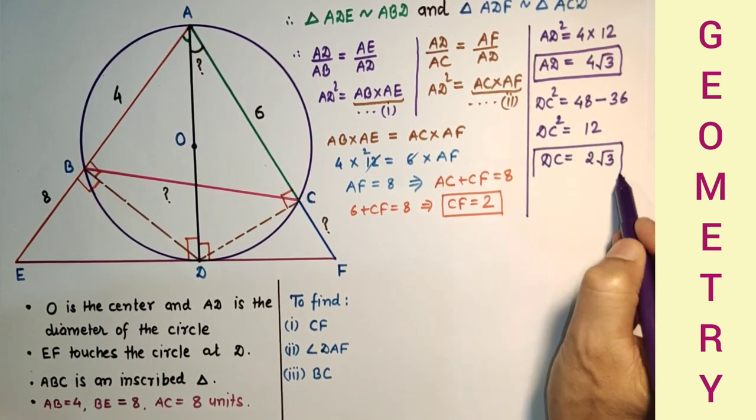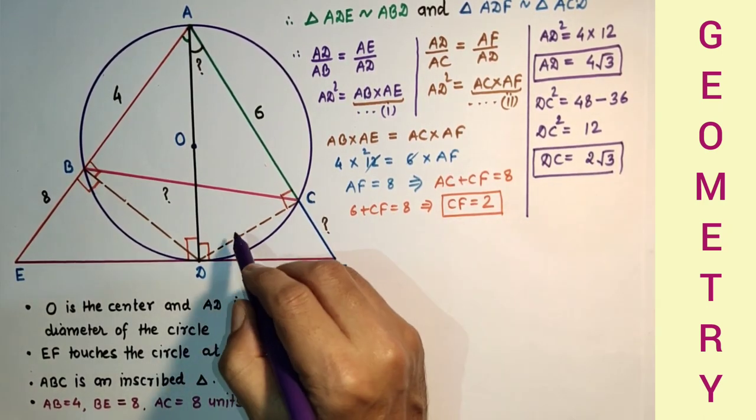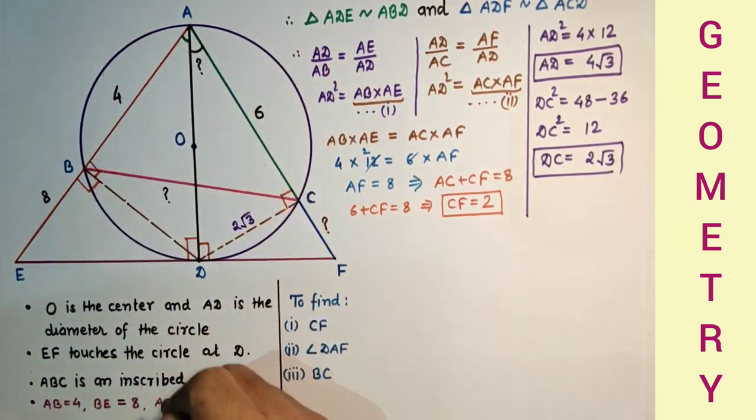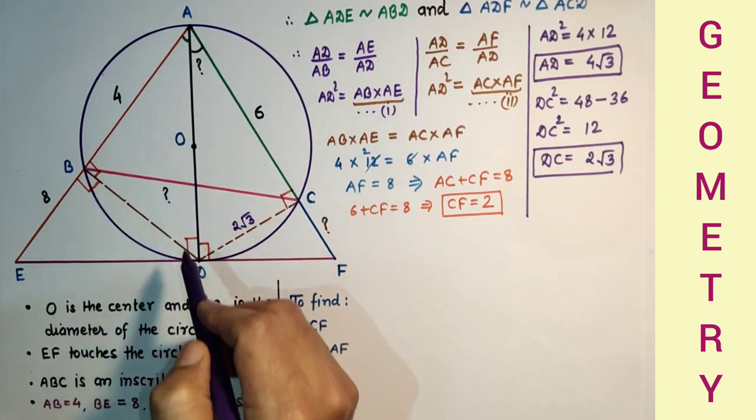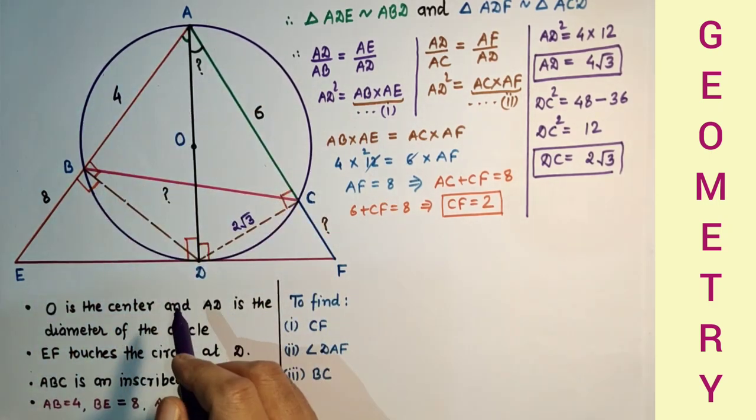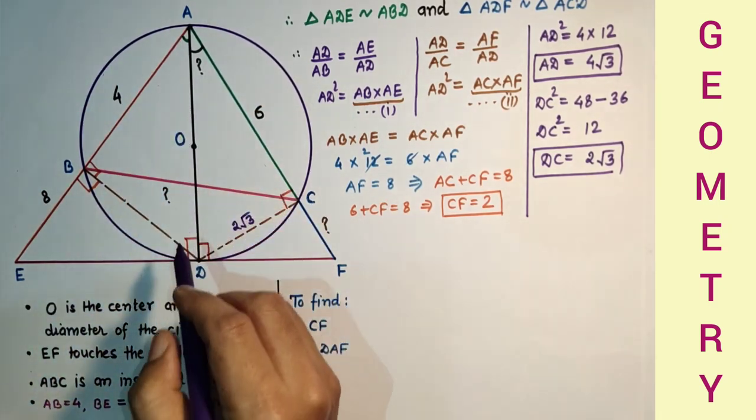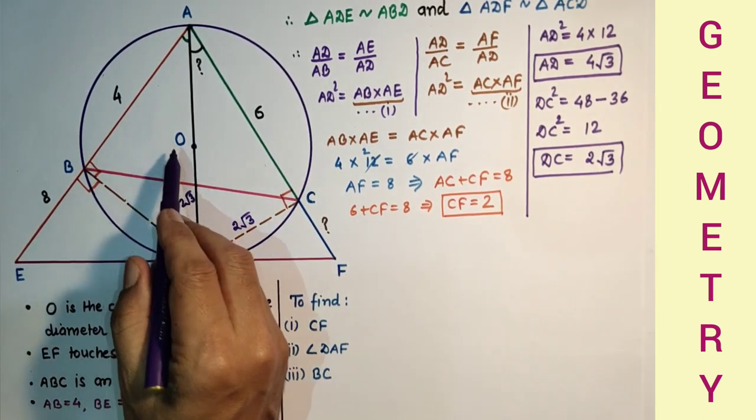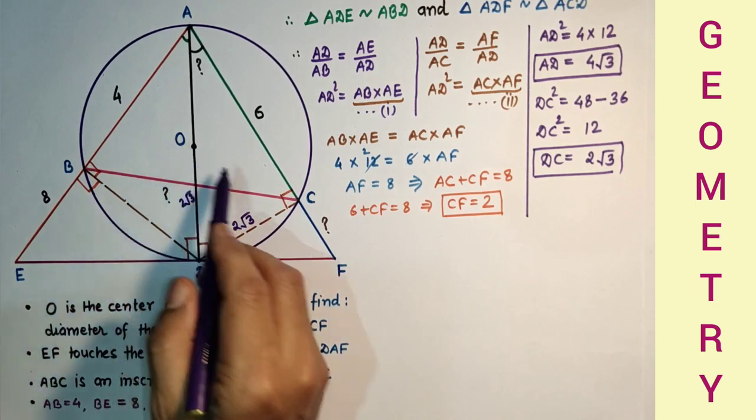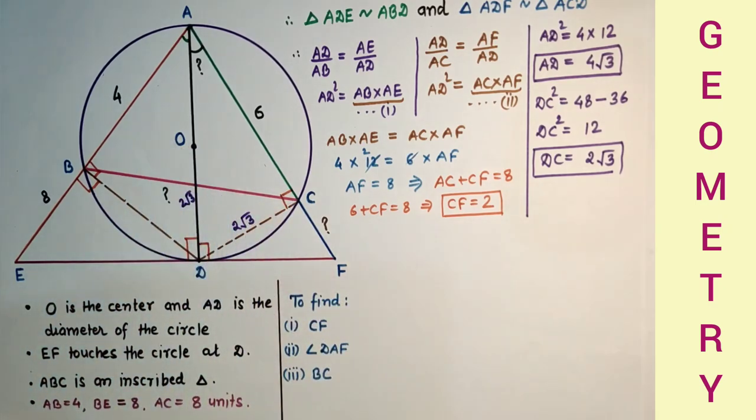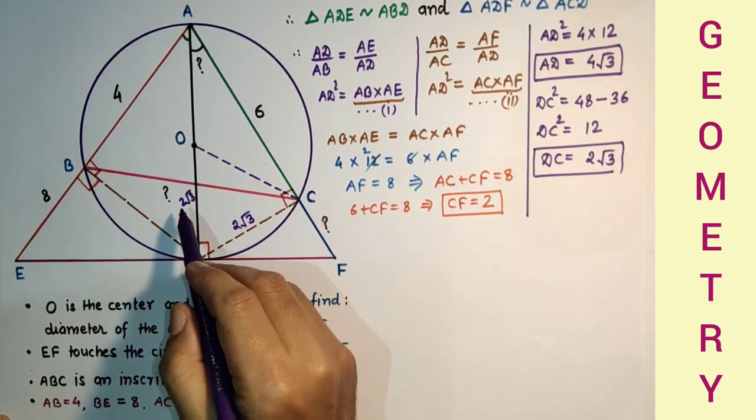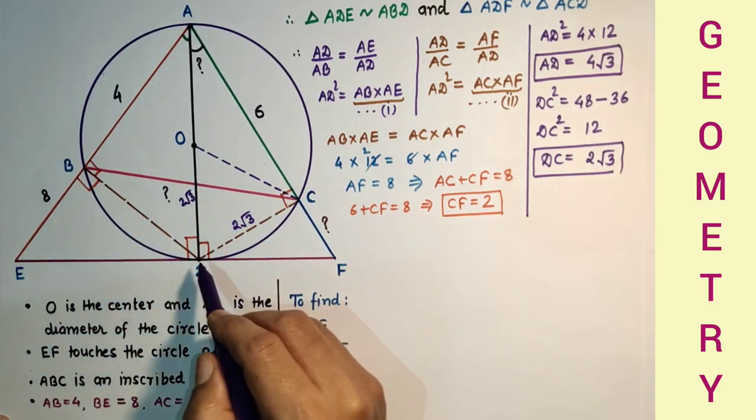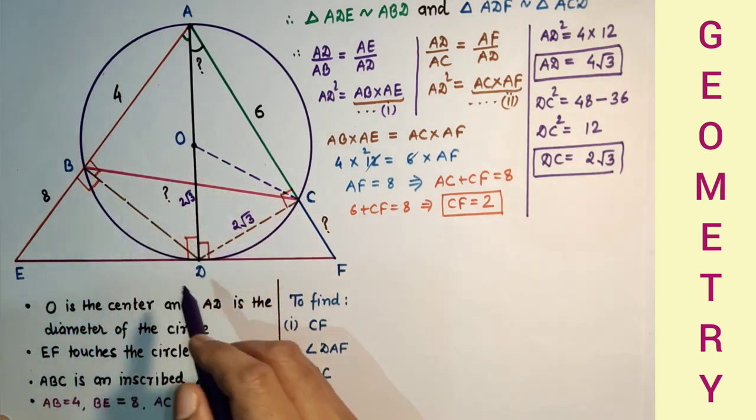DC is 2√3, and the whole diameter is 4√3, so radius OD is 2√3.